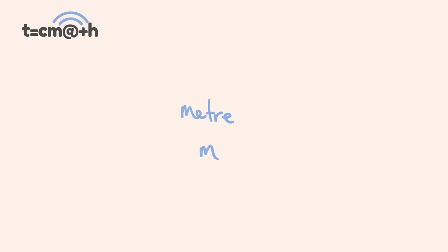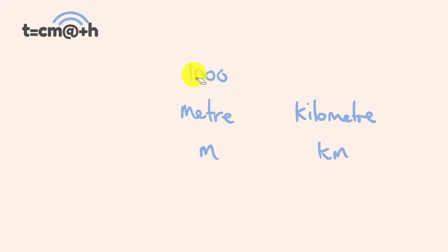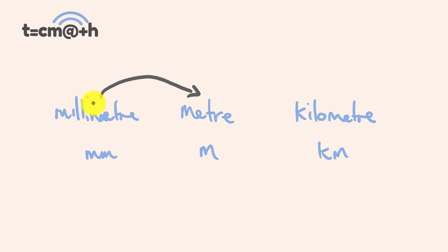Other units we have in length: a thousand meters is equal to one kilometer — kilo means thousand — and the abbreviation is KM. We also have the millimeter, where we divide a meter a thousand times, written as two M's. So converting between these is fairly simple: there's a thousand millimeters in a meter, and there's a thousand meters in a kilometer. To go from millimeters to meters, or from meters to kilometers, we divide by 1,000.